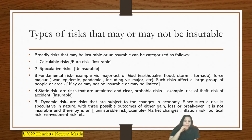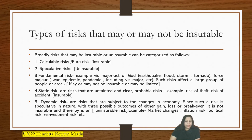Next is dynamic risk. Dynamic risks are risks subject to changes in the economy. Since such a risk is speculative in nature with a possible outcome of either gain, loss, or break-even, it is not insurable and is thereby an uninsurable risk. Examples include market changes, inflation risk, political risk, reinvestment risk, and so on.